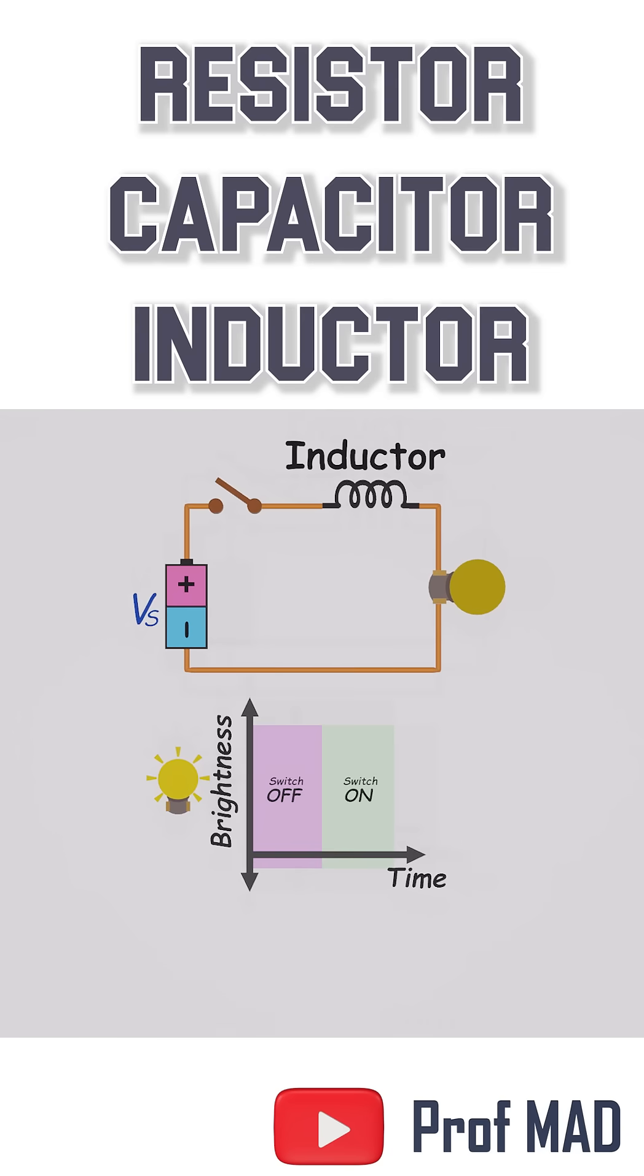Third circuit swapped the capacitor for an inductor. At first, the bulb barely glows. Then it slowly brightens until it's fully on. The inductor resists the sudden change in current, easing it in over time.